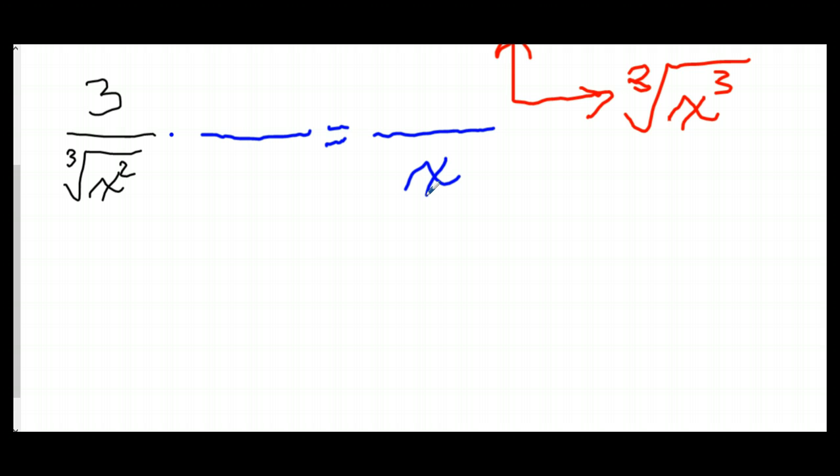Well, what should that be? Well, again, it's going to be almost the same as we saw before, but I need to multiply. Remember, this needs to be cube root of x cubed. So if I multiply cube root of x squared by cube root of x, I get cube root of x cubed.